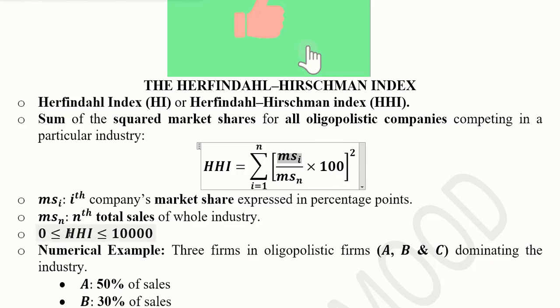The range of HHI starts from 0 and goes to 10,000. When firms have very small market shares, squaring those values makes them even smaller, so the sum approaches 0. At the other extreme, if one firm holds 100% market share, its squared share equals 10,000, revealing the presence of a monopoly. So HHI has equal applicability from perfect competition all the way to monopoly.